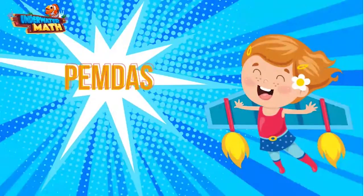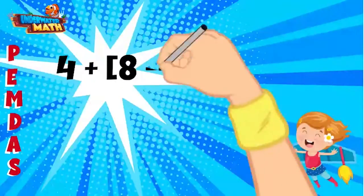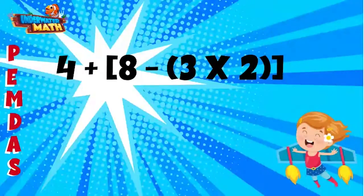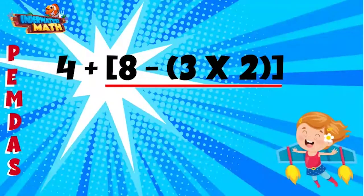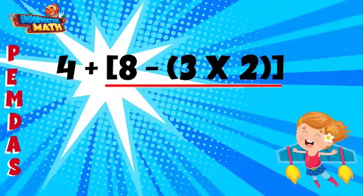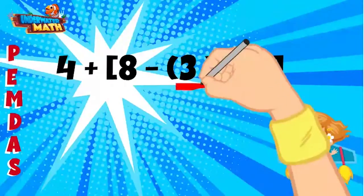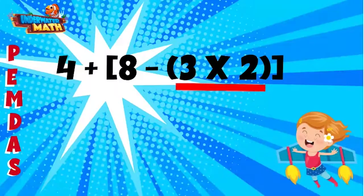Let's try this out — first we solve parentheses. This problem has inner parentheses and outer parentheses called brackets. Once you move inside a set of parentheses or brackets, your order of operations starts over. Inside our brackets we have parentheses, so we start there: 3 times 2 equals 6.